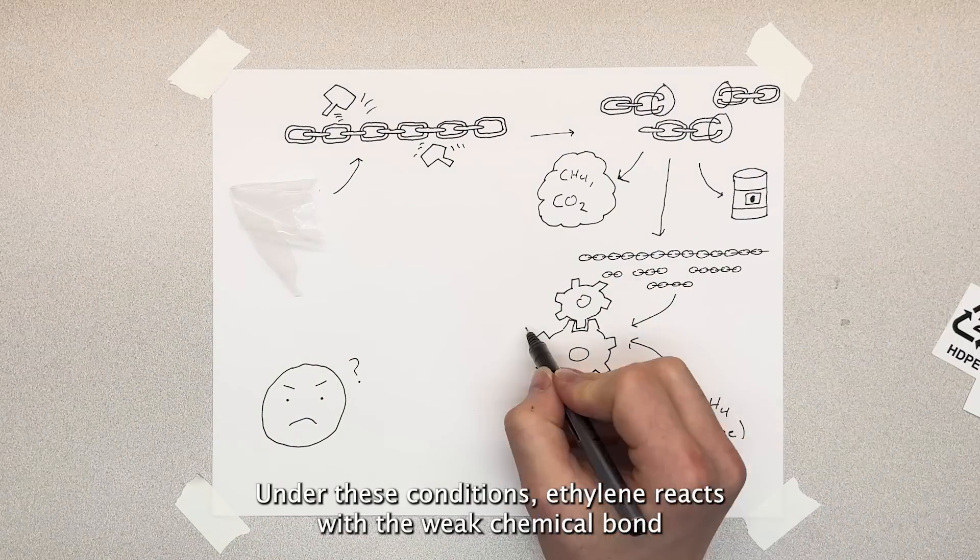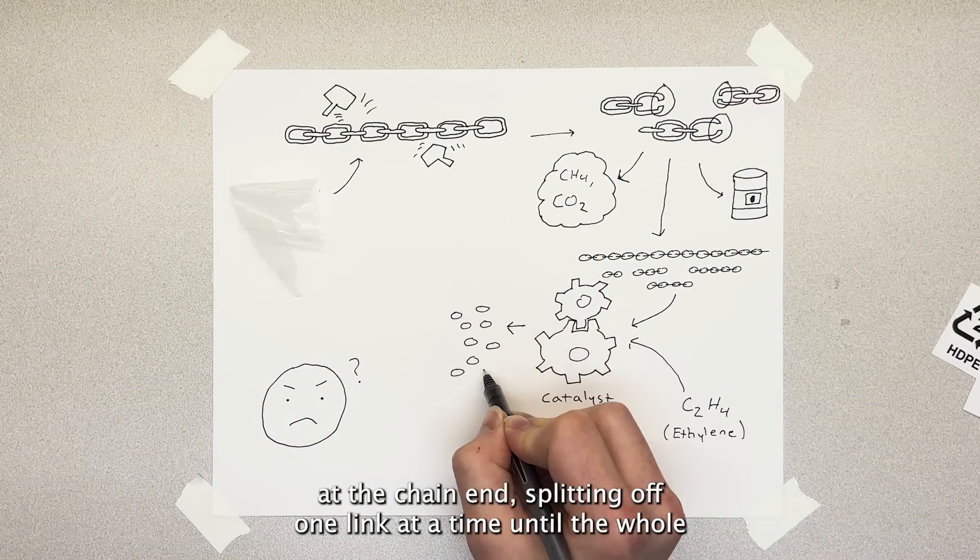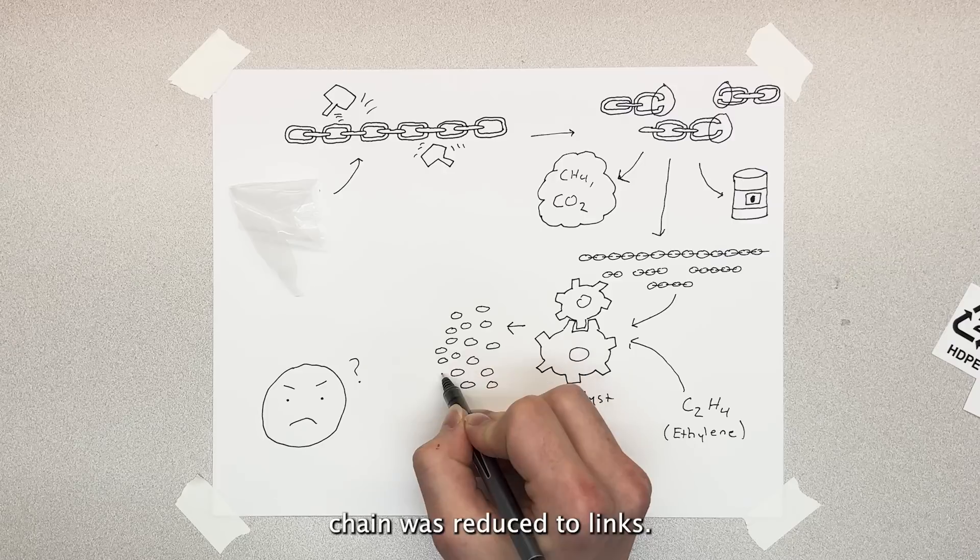Under these conditions, ethylene reacts with the weak chemical bond at the chain end, splitting off one link at a time until the whole chain was reduced to links.